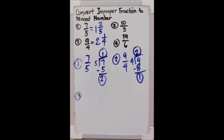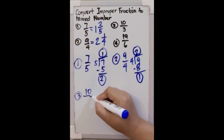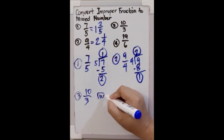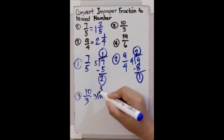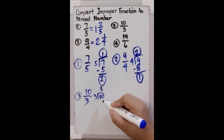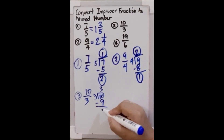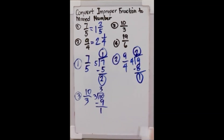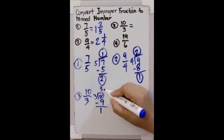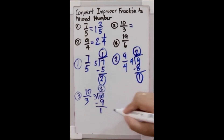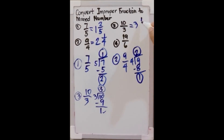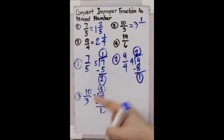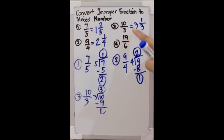Next example, number 3. We have 10 over 3. We will divide 10 by 3, which gives us 3. 3 times 3 is 9, and 10 minus 9 is 1. So we write the quotient first: 3, and then the remainder 1 over the denominator 3. So 10 over 3 is equal to 3 and 1 third.